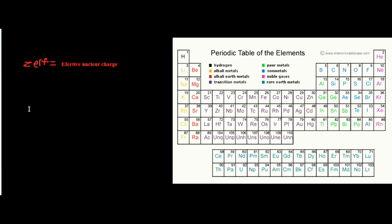To find the Zeff of any atom, you first take the number of protons and subtract the number of core electrons. Core electrons are basically like a lamp shade analogy.